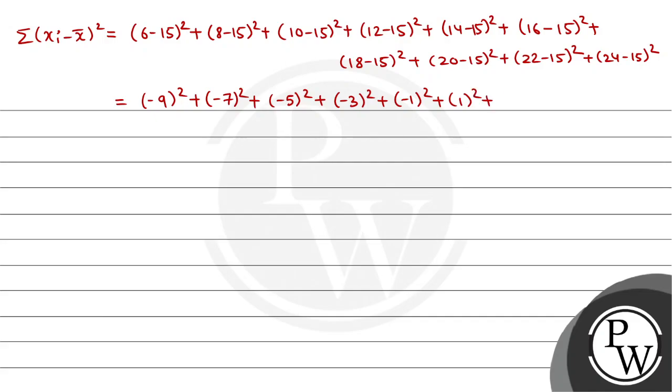So here we get 81 plus 49 plus 25 plus 9 plus 1 plus 1 plus 9 plus 25 plus 49 plus 81.